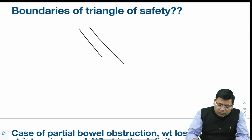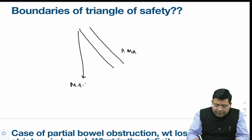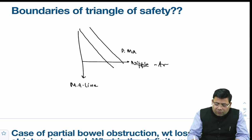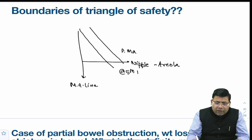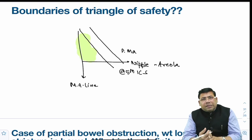The triangle of safety boundaries: pectoralis major, the mid-axillary line, and an imaginary line towards the nipple-areola complex. This points to the level of the fifth intercostal space. This triangle is known as the triangle of safety.